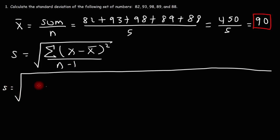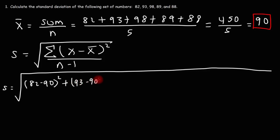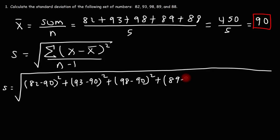So the first number is 82. We're going to subtract the mean, which is 90, and then square it. The next number is 93 — we're going to subtract the mean and then square it. The mean is 90. And then it's going to be 98 minus 90, and then we're going to keep doing this until it's finished.